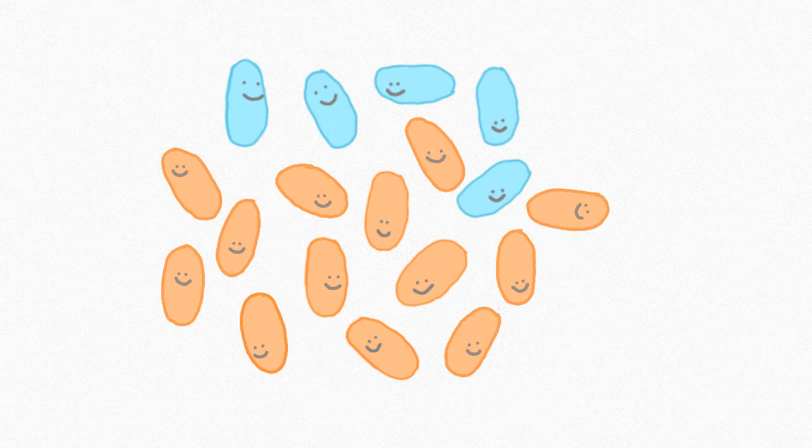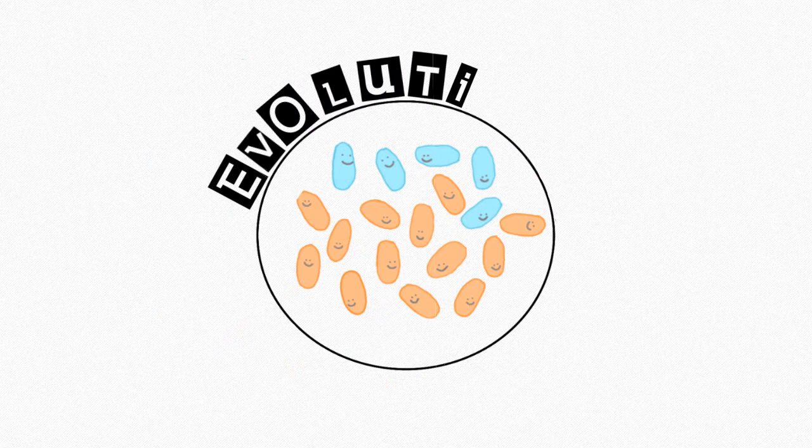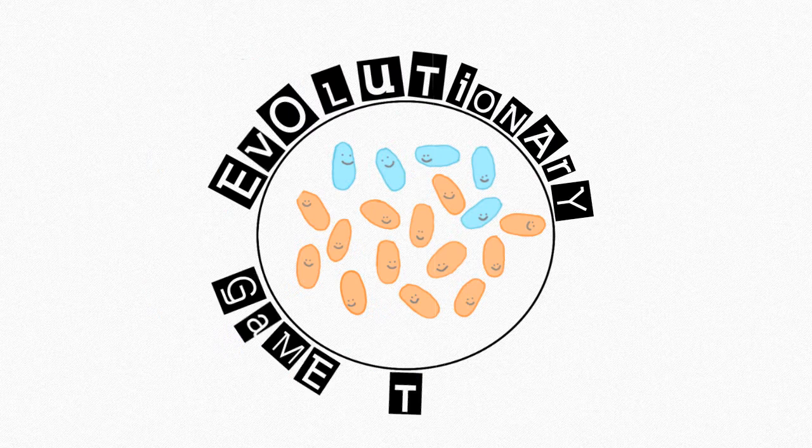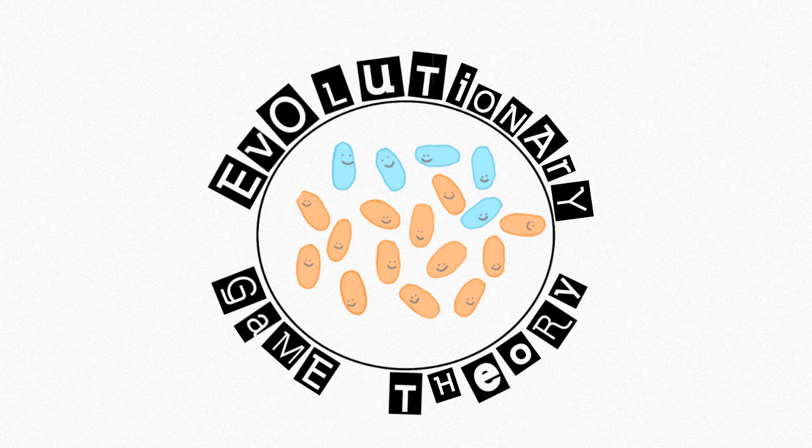Orange would basically start invading the petri dish, but not completely. So that's an introduction to evolutionary game theory. While the numbers are chosen at random, you get an idea of what this area of mathematical biology is about.